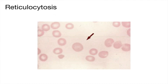Reticulocytes are large, immature red cells. Normally fewer than 2% of cells on a blood film are reticulocytes; more than this indicates reticulocytosis. Large amounts of reticulocytes can cause a mild macrocytosis. These cells also show a characteristic bluish tinge on the blood film called polychromasia.